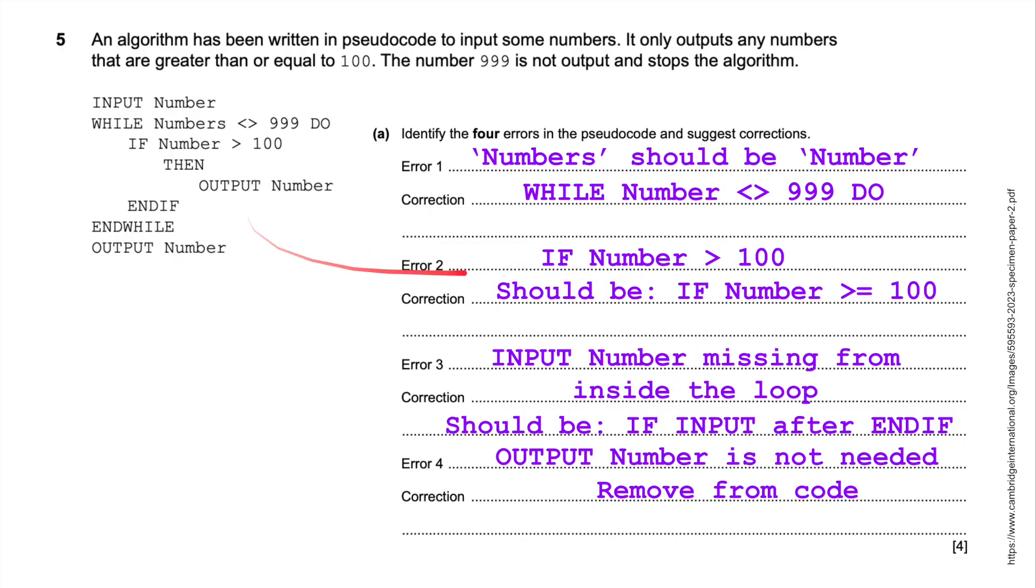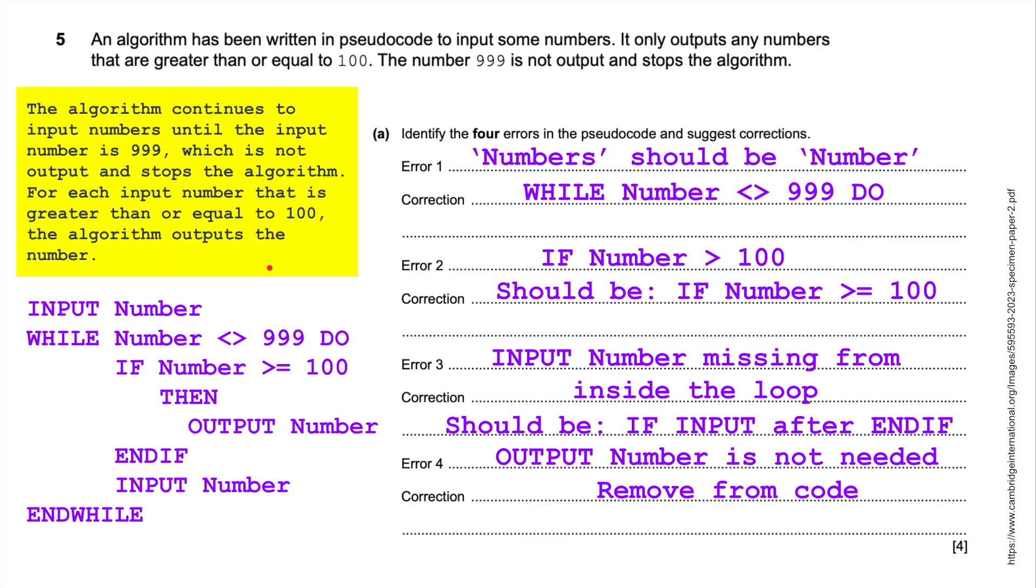And you might not spot this, we've got an input missing. We input the first number, but then we've got to put another input number in here after the end if to continue inputting numbers through this loop. And then if the number reaches 999, we end the while loop. Output number is not needed, removed from the code. It's outputting the numbers every time here. Every time we go through the loop, it outputs a number. So we don't need this final output number, otherwise it's going to do it twice.